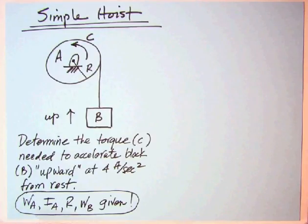You would be given the weight of A, the moment of inertia about the axle at A, which might include the motor armature and gears, the radius of the actual pulley of the hoist winch, and the weight of the block. All of that would be given.